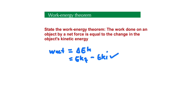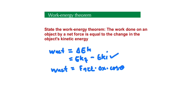Essentially, what the work-energy theorem is saying is: if there is some work done on an object by a net force, you can look at the object's change in kinetic energy and that will give you the net work done on the object by the net force. Let me show you how it comes about. Initially, we agree that W_net equals F_net multiplied by Δx multiplied by cos θ. If the net force is in the same direction as the displacement, we get cos 0 which equals 1, leaving us with F_net multiplied by Δx.